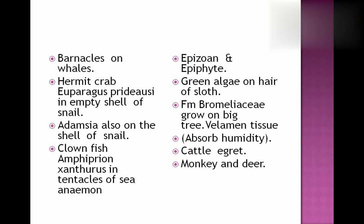Epizones are small animals living on the outer surface of big animals. Epiphytes are small plants that live on the outer surface of big plants. Both epizones and epiphytes get shelter there. Green algae lives on the hair of sloth bear — the sloth bear is not affected by this relationship and the green algae gets protection and shelter.